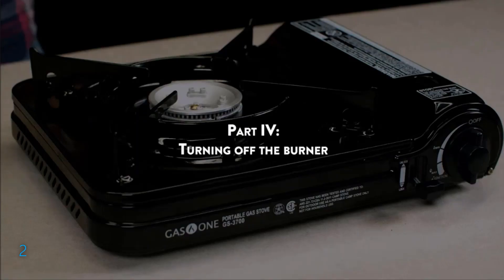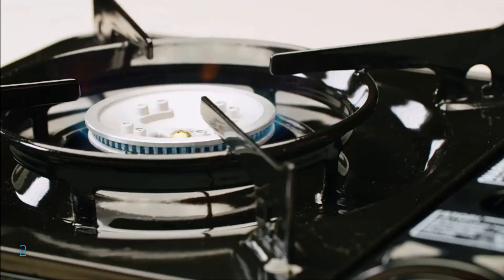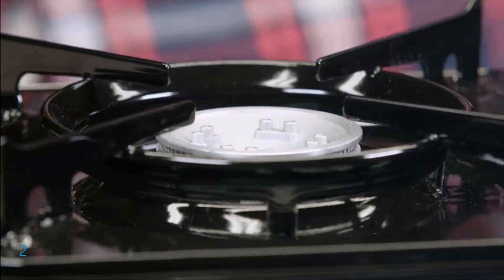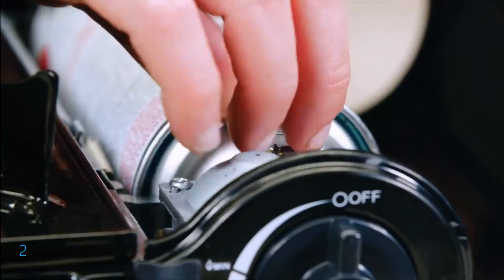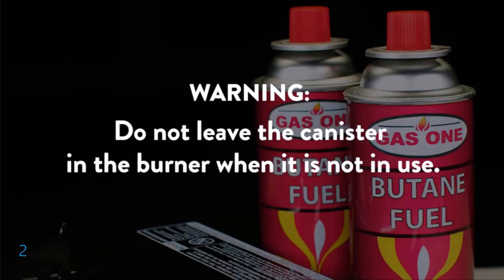Part 4: Turning Off the Burner. Turn the ignition knob to the off position to cut off the fuel supply. Wait until the flame is completely extinguished before proceeding. Next, raise the canister lock lever to unlock and remove the gas canister from the canister compartment. Do not leave the canister inside the burner when it is not in use.